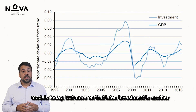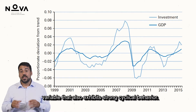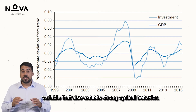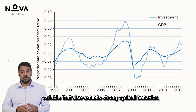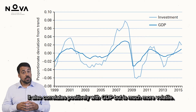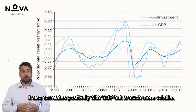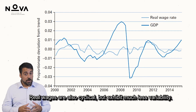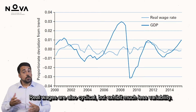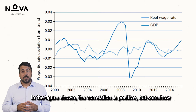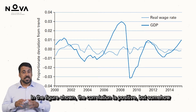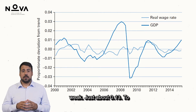Investment is another variable that also exhibits strong cyclical behavior. It correlates positively with GDP but is much more volatile. Real wages are also cyclical but exhibit much less variability. In the figure shown, the correlation is positive but somehow weak, just about 0.13.